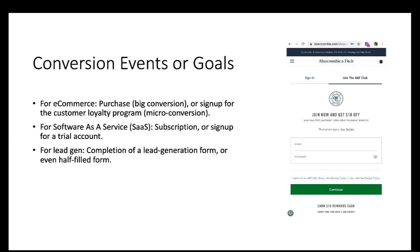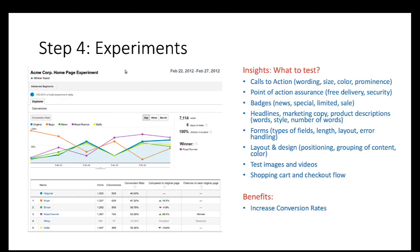Even half-completing the form is a micro conversion, so vendors can follow up with the customer to offer their service. For content websites such as CNN or weather.com, the big conversion is ad clicks, and a micro conversion could be an ad display — since display ads are paid less than pay-per-click ads.